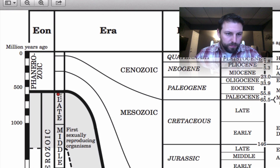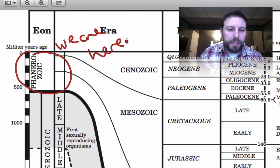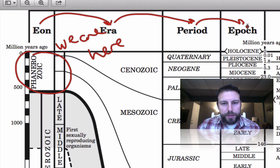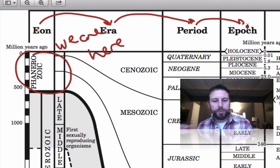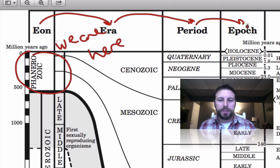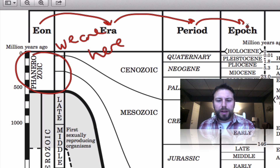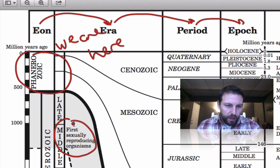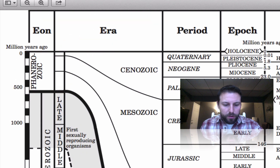We're in the Phanerozoic eon — here it is, the largest timeline. Notice that eons are broken up into eras, eras are broken up into periods, and periods into epochs. The time periods are usually broken up based on major events that occurred, such as major extinctions or the appearance of new forms of life. Now let's move ahead in time past the first sexually reproducing organisms, where the Pre-Cambrian pulls us into the Phanerozoic.